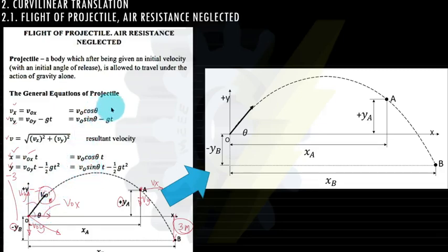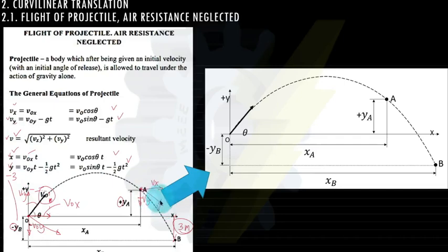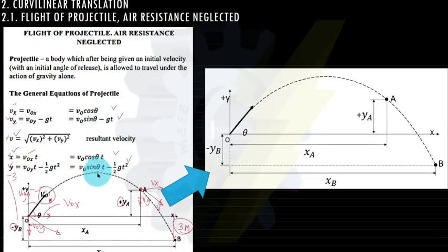The resultant velocity v has components vx and vy. If vy is negative, the object is moving downward. If vy equals zero, the object is at its highest point. If vy is positive, the object is still moving upward. The vx component always points to the right.